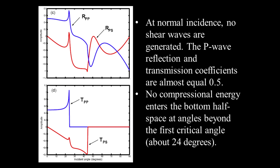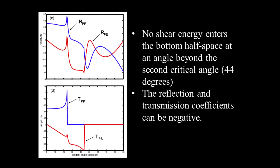Three angles show nearly total P wave reflection: the first critical angle (24°), the second critical angle (44°), and theta equals 90°. Two angles show nearly total reflection as shear: 44° and 70°. The compressional reflection amplitude is very small at about 35°, and no converted shear reflection occurs at 24°, 44°, or 90°. Note that beyond 45°, the reflection and transmission coefficients can be negative.